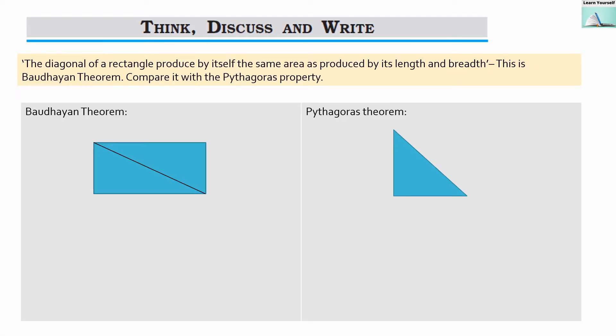Our next question is, the diagonal of a rectangle produced by itself, the same area as produced by its length and breadth. This is Baudhayan theorem. Compare it with the Pythagoras property.